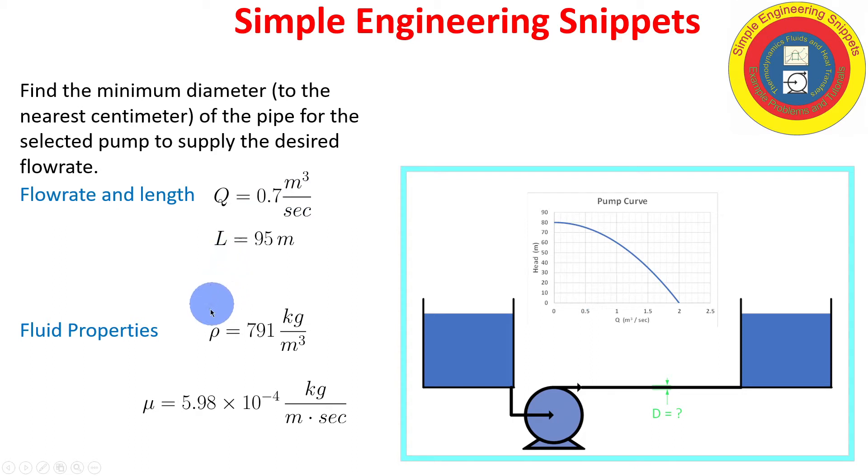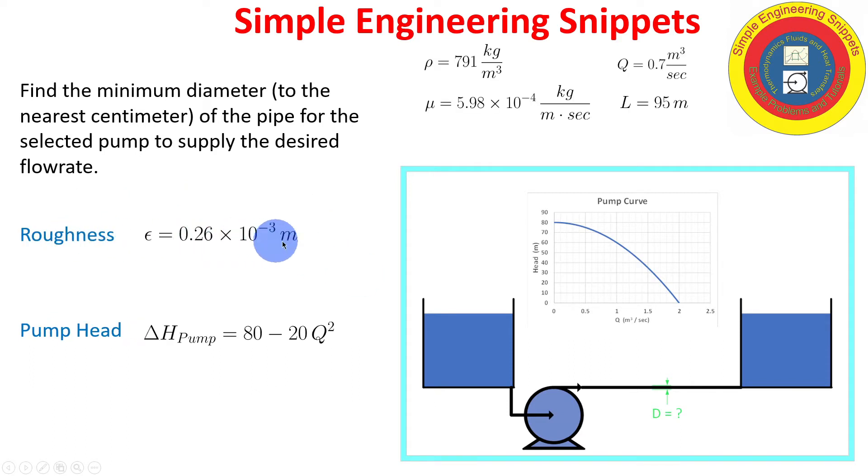The fluid is methanol. Density is provided along with the dynamic viscosity. Now the relative roughness of the pipe is provided. So we'll be needing that to calculate the friction factor possibly. And also the equation for the pump curve is provided. Now our desired flow rate again is 0.7 cubic meters per second. And so we plug that into the equation for the pump curve. And at our operating point the pump will be supplying 70.2 meters of energy to the fluid.